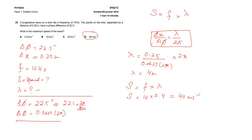Okay, October November 2018, Paper 1, Variant 2, and the question number is 22.